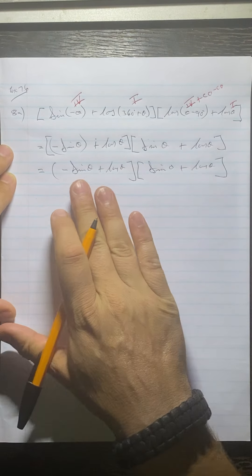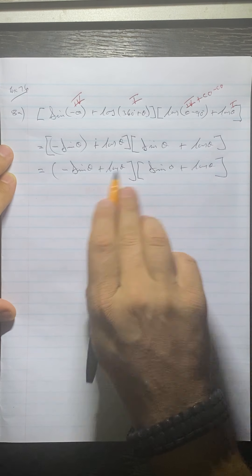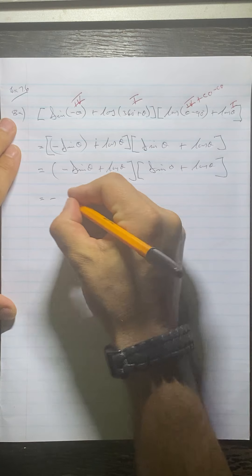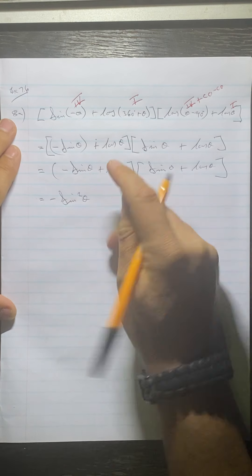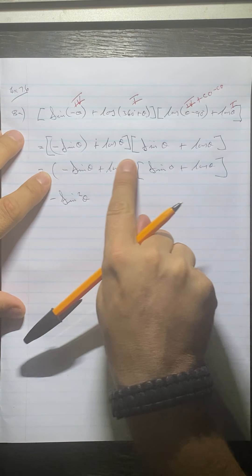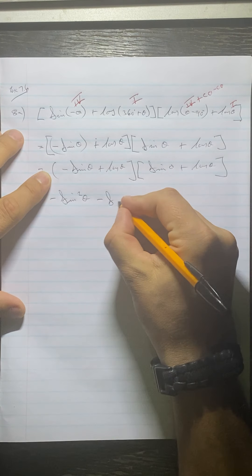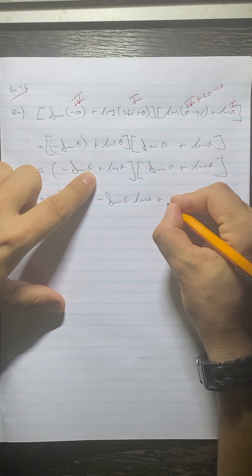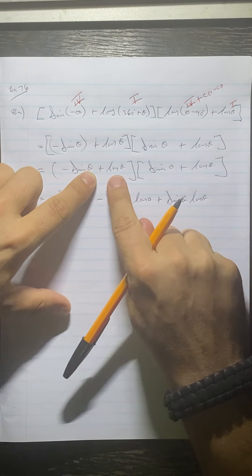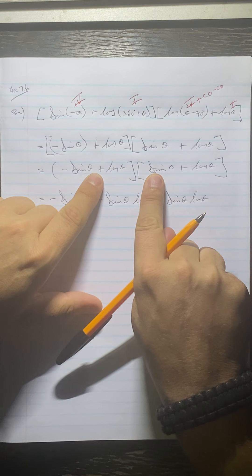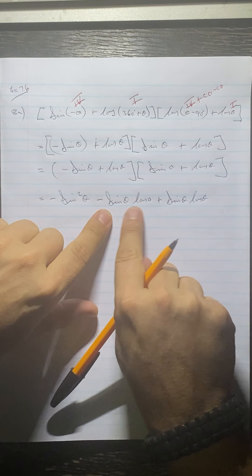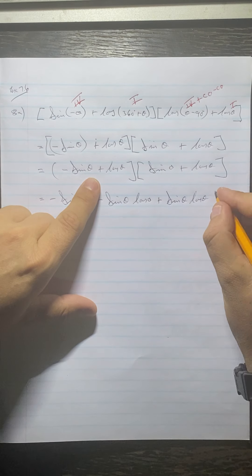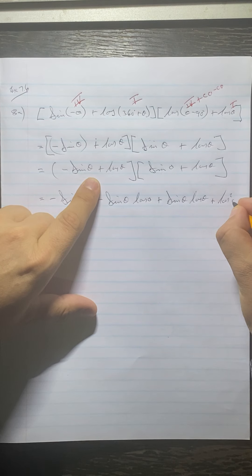Grade 11s, you've seen this before — this is a binomial multiplied by a binomial. So we're going to do firsts, outers, inners, and lasts. The first with the first is going to give us negative sine squared theta, because sine times sine is sine squared. The outers — that and that will give us negative sine theta cos theta. The inners will give us plus sine theta cos theta.